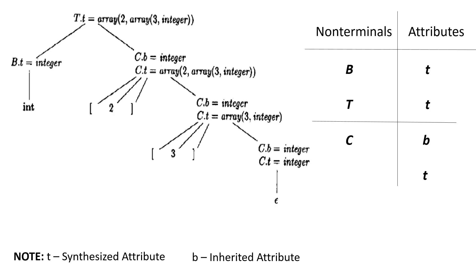The inherited b attribute passes a basic type down the tree, and the synthesized t attribute accumulates the result. The annotated parse tree for the input string int 2 by 3 is shown below. The corresponding type expression is constructed by passing the type integer from b down the chain of c's through the inherited attributes b. The array type is synthesized up the chain of c's through the attributes t.